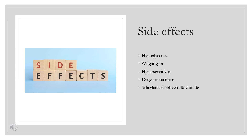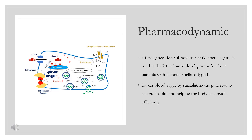Side effects include hypoglycemia and weight gain. There is hypersensitivity and cross-allergenicity with sulfonamides. Drug interactions — especially with first-generation drugs — include increased hypoglycemia with cimetidine, insulin, salicylates, and sulfonamides. Salicylates displace tolbutamide from its binding site on plasma binding proteins, which leads to an increase in free tolbutamide concentration, thus causing hypoglycemic shock — a pharmacodynamic interaction.